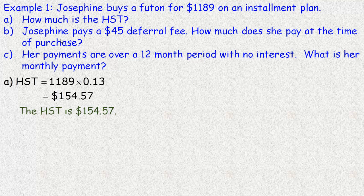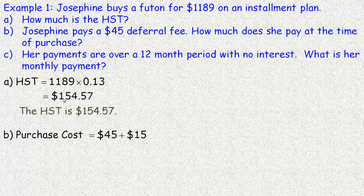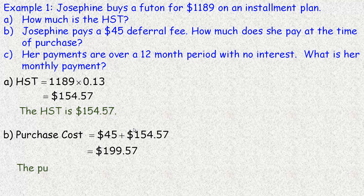Part B says Josephine pays a $45 deferral fee — so how much does she pay at the time of purchase? She pays the tax plus the $45 deferral fee, so we add those together. She's paying just under $200: $199.57. So the cost at the time of purchase is $199.57.